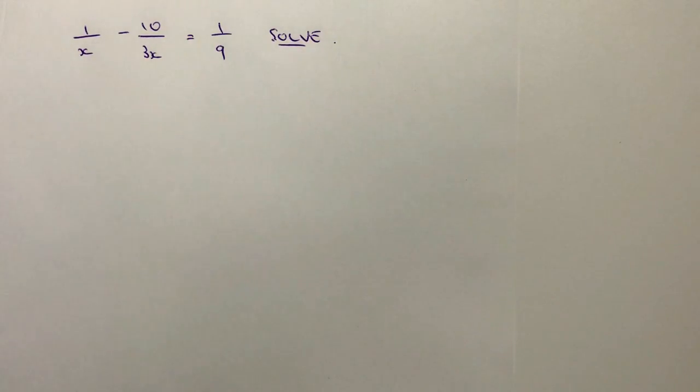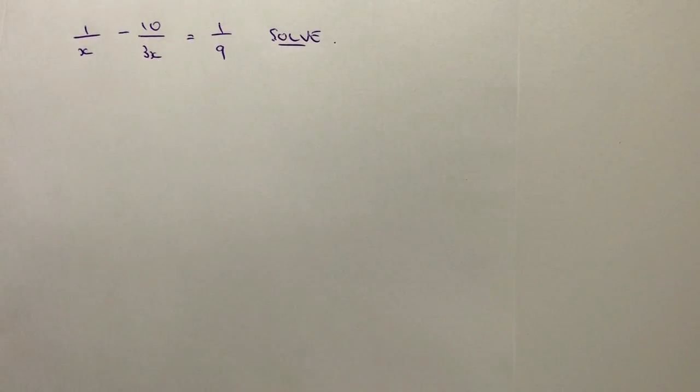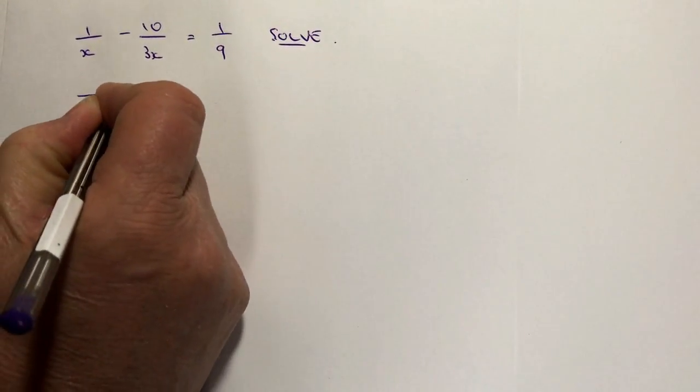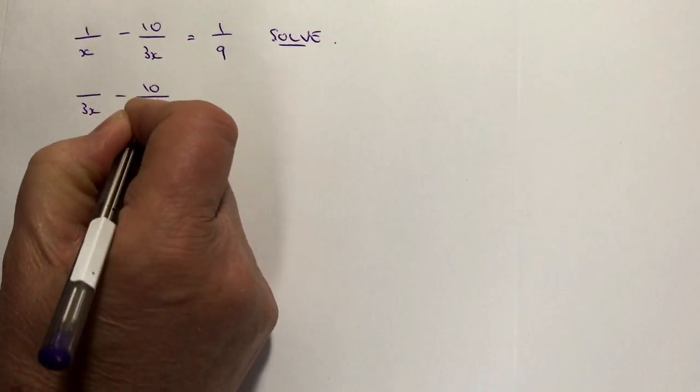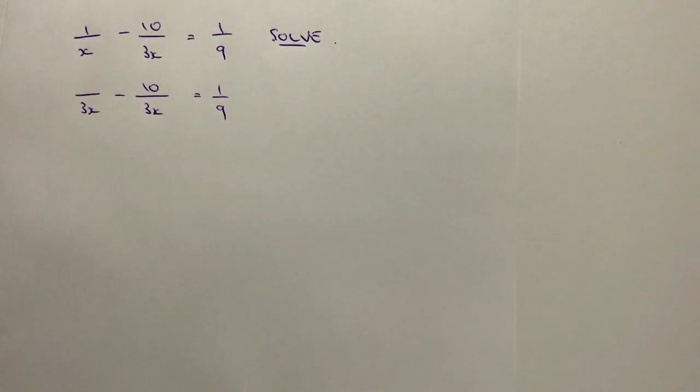What we need to do is make sure that if we're taking away two fractions from one another, we need to make sure that the denominator is the same. In this particular case, I'm going to make the denominator 3x. So I'm going to make this something over 3x minus 10 over 3x and that equals 1 over 9.